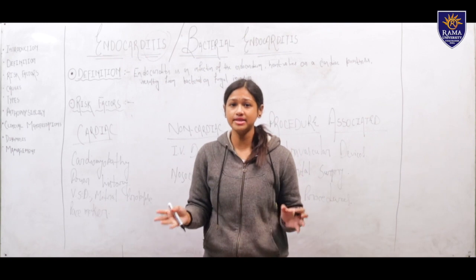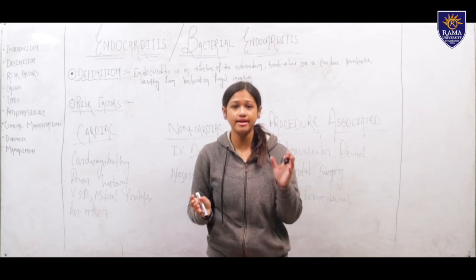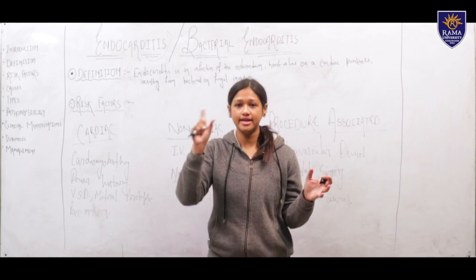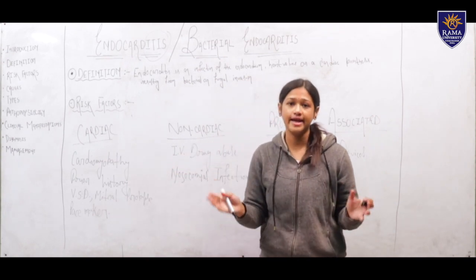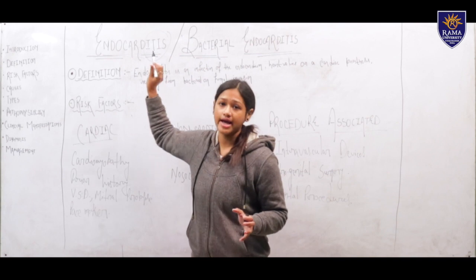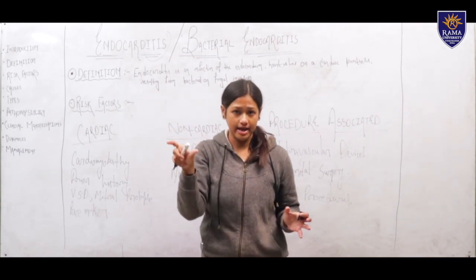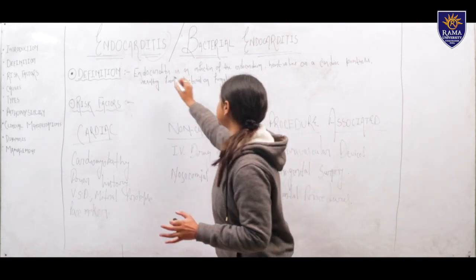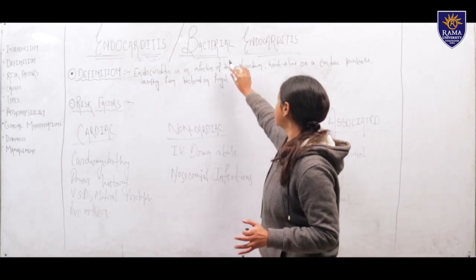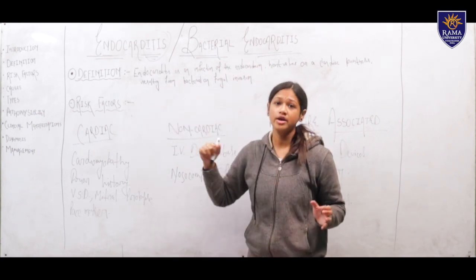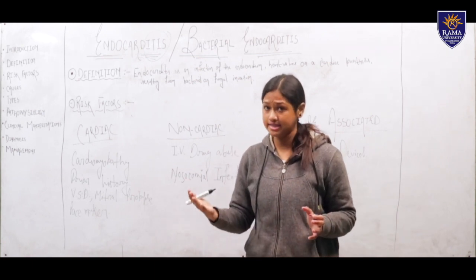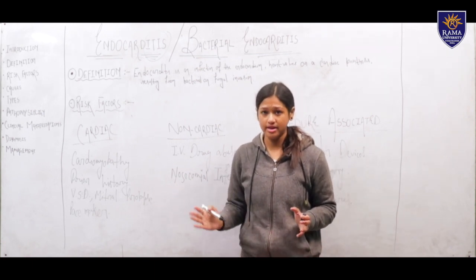Every visceral organ has some layers, and just like other organs, the heart has three layers. The innermost layer of the heart is known as the endocardium. This disease condition is associated with the inner lining of the heart and is known as endocarditis, also sometimes called bacterial endocarditis or infective endocarditis, as it is generated from a bacterial infection.